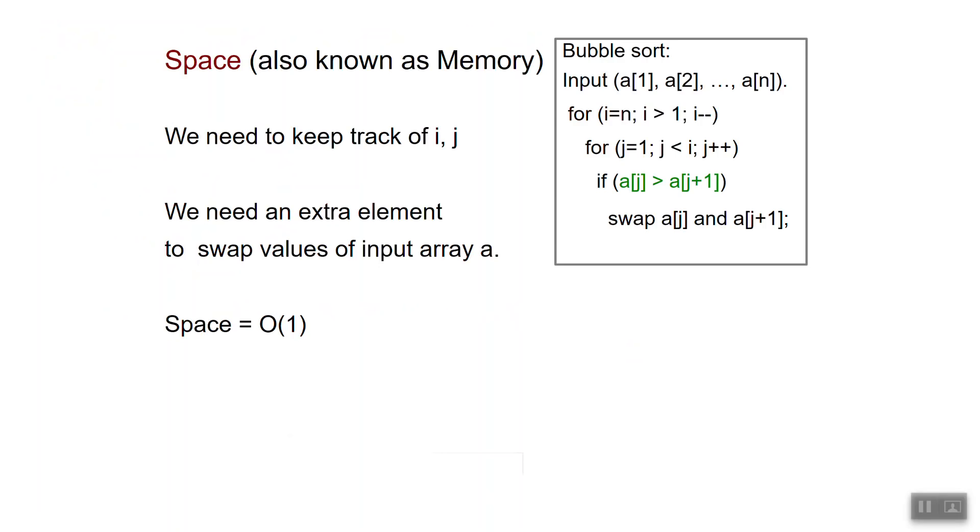We can now turn to the analysis of the memory, also known as space, of the algorithm. An important thing to keep in mind is that we never charge for the input itself. Okay, that's not fair. We only charge for the things that are stored in addition to the input itself. And the only other things that we need in addition to the input for bubble sort are the indices i and j. And depending on how you implement the operation swap, you may need an extra element.